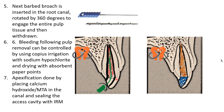Once pulpectomy is over, we proceed towards apexification. Calcium hydroxide or mineral trioxide aggregate is placed in the empty canal space, ensuring it comes in contact with the periapical tissue. This is sealed with a temporary or intermediate restorative material and the patient is recalled after three months to check for root apex formation.